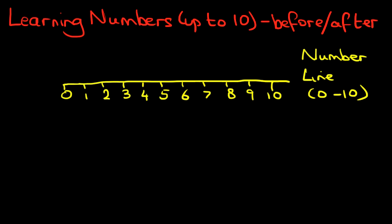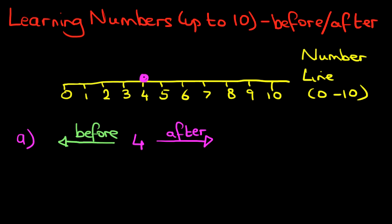So now let's suppose we've got our question which states 4. We've got the number 4 and we want to work out which number comes after 4, and in a different color we're going to work out which number comes before 4. So first things first, we have to find number 4 on our number line. It is over here. Let's put a little circle or a ball.